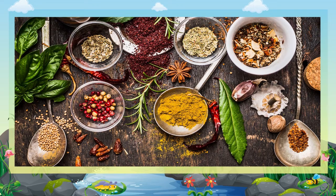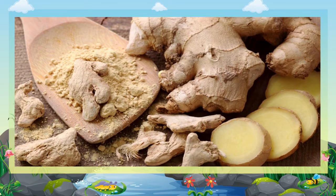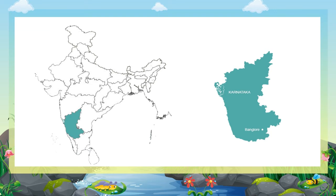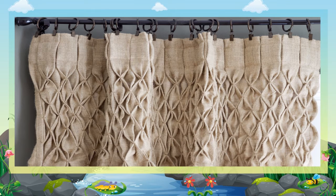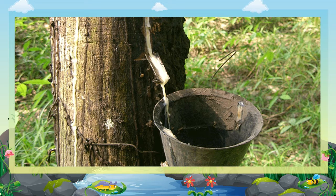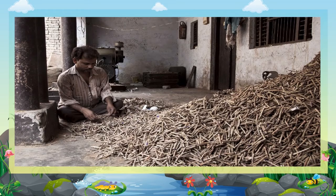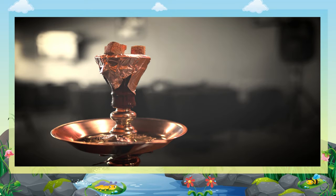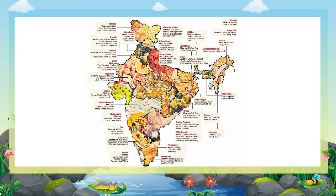Spices lend flavor to our food; they include cardamom, cloves, pepper, chilies, ginger, etc. Kerala and Karnataka are the leading producers of spices. Jute is called the golden fiber; it is used for making bags, carpets, curtain cloth, etc., and grows well in the Ganga delta region of West Bengal, Assam, and Bihar. Rubber is obtained from the rubber tree and grown in Kerala and Tamil Nadu. Tobacco is used in beedis, cigarettes, hookah, etc., and is mainly grown in Andhra Pradesh.